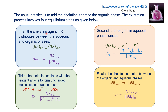In the first step, the chelating agent dissolved in the organic phase, represented as HR, distributes itself between the organic and aqueous phases, establishing an equilibrium. The distribution ratio for the HR reagent is defined as the concentration of HR in the organic phase divided by HR in the aqueous phase.